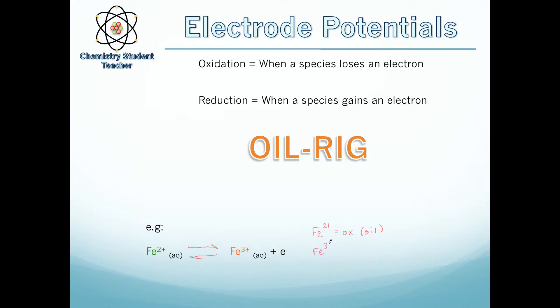Whereas the reverse reaction is Fe3+ plus an electron goes to Fe2+. So it's gained an electron, also known as a reduction, which is RIG. See, it's nice and easy to remember this. You can just look at it and see has it gained or lost an electron to tell if it's an oxidation or reduction.